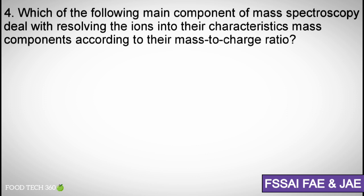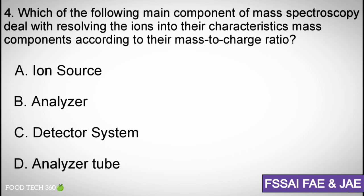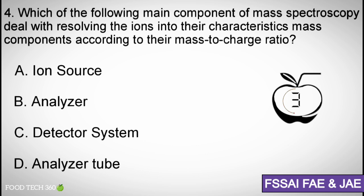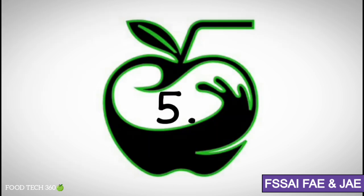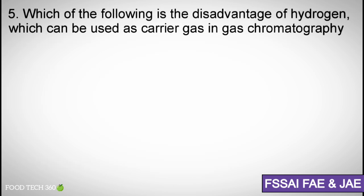Question number four: Which of the following main components of mass spectroscopy deals with resolving the ions into their characteristic mass components according to their mass-to-charge ratio? Options: (a) ion source, (b) analyzer, (c) detector system, (d) analyzer tube. Correct answer: (b) analyzer.